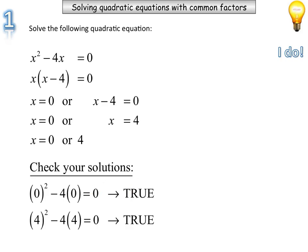Looking at the second solution, 4: 4 squared, take away 4 lots of 4, which is 16, take away 16. That is equal to 0, so therefore it's true. So our two solutions are x is equal to 0 or 4.